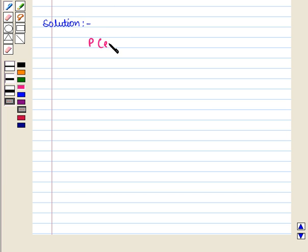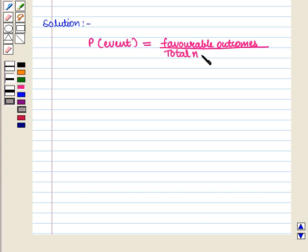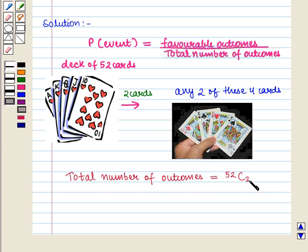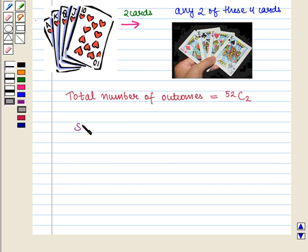We know that probability of an event is given by favourable outcomes upon total number of outcomes. Since we have to draw two cards simultaneously from 52 cards, the total number of outcomes will be 52C2. Here we want to choose only two kings, as there are four kings in the deck of 52 cards. So favourable outcomes will be 4C2.